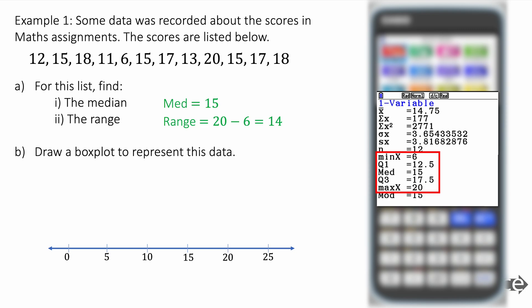Now to draw a box plot, we care about the minimum, the Q1 lower quartile, the median, Q3 the upper quartile and the max like this. So the minimum is 6, Q1 is 12.5, median is 15, Q3 is 17.5 and max is 20. And we draw a box plot like this.